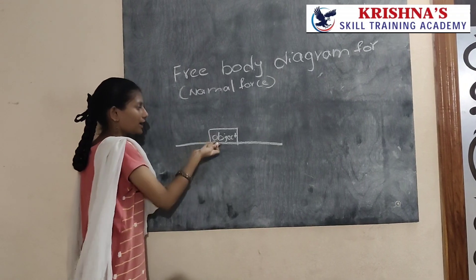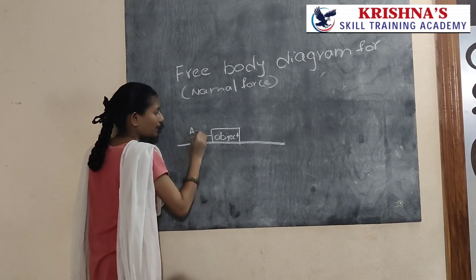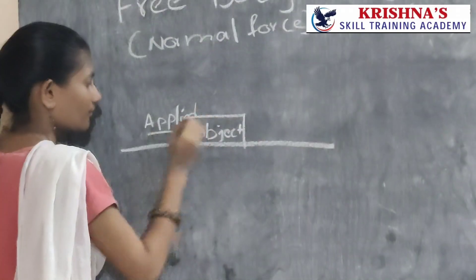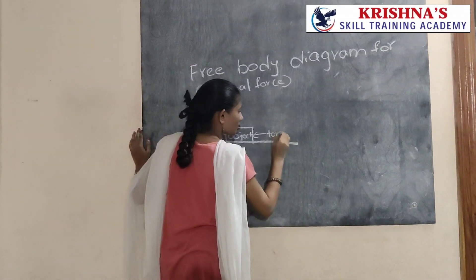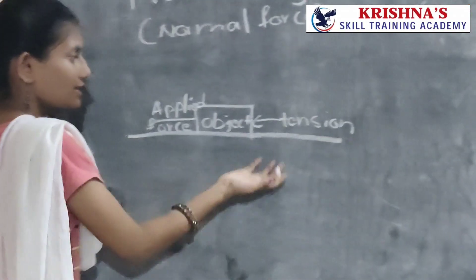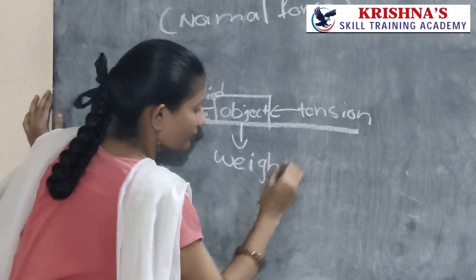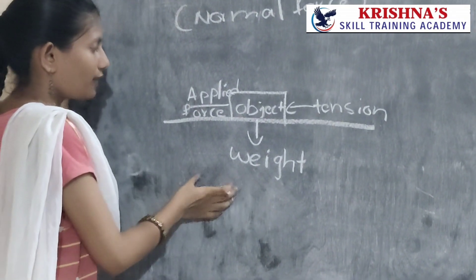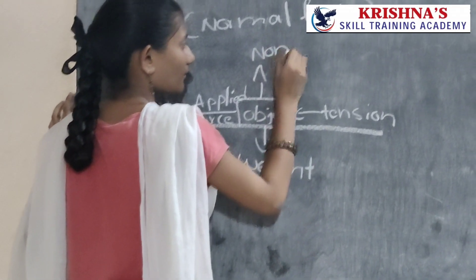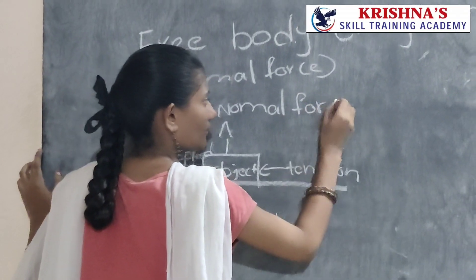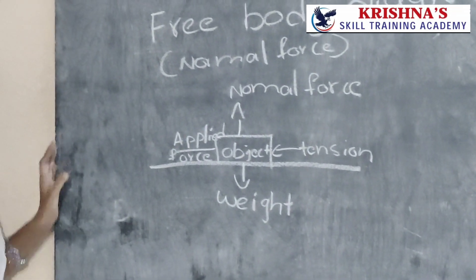The object is lying on the surface. Here I have applied a force. The tension will always react against the applied force. Weight or gravitational force will always pull the object downwards. The normal force will always act on the object in the upward direction. Thank you.